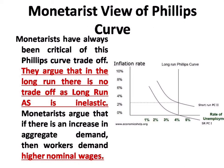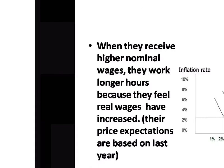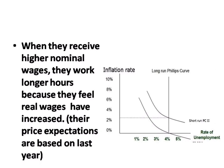Monetarists argued that if there is an increase in aggregate demand, then workers demand higher nominal wages. When they receive higher nominal wages, they are willing to work more hours, so labor supply increases. As a result, workers feel that their real wage has increased — but actually, it is only the nominal wage that has risen.